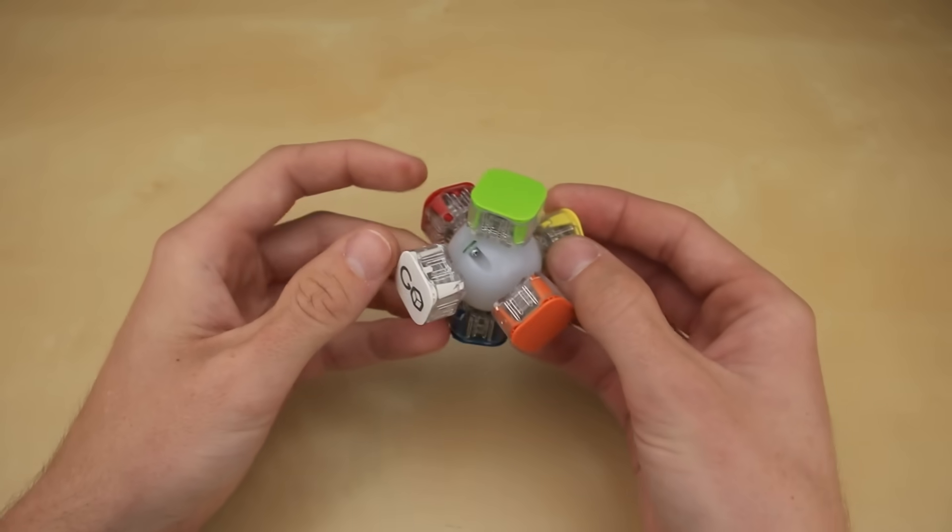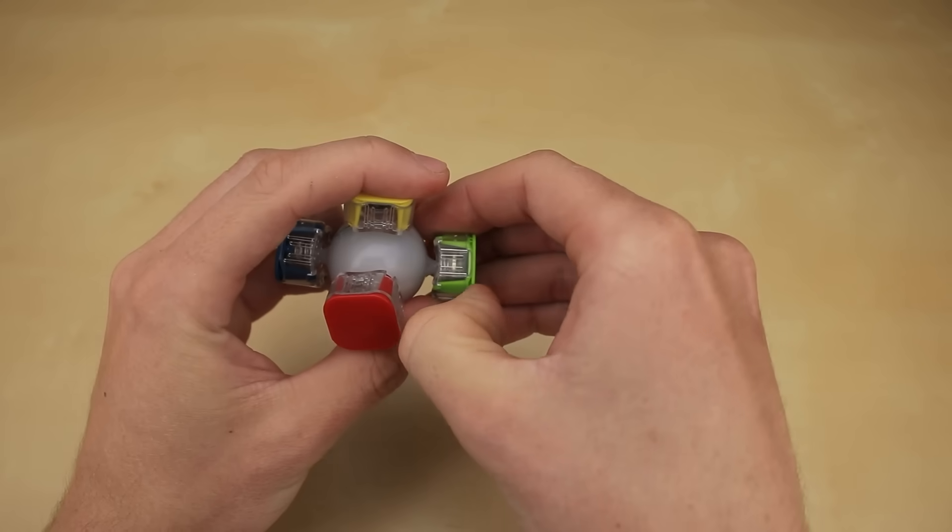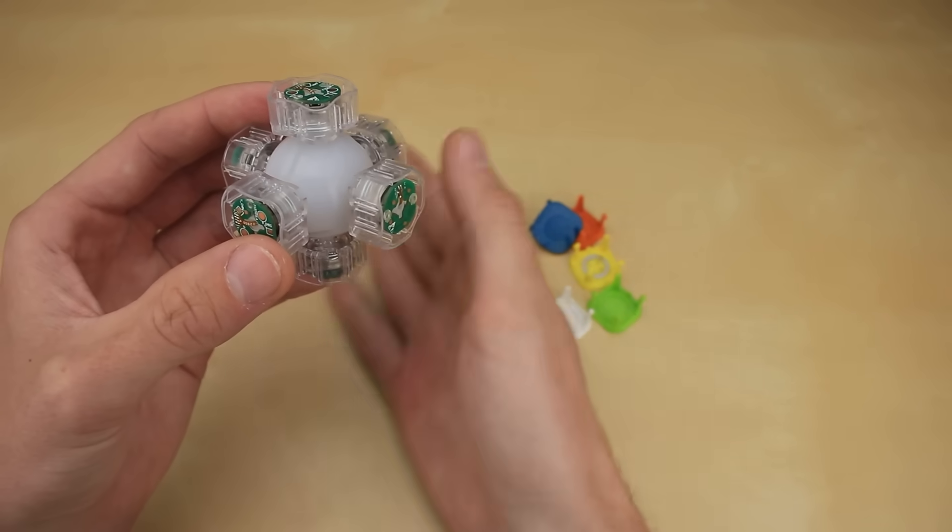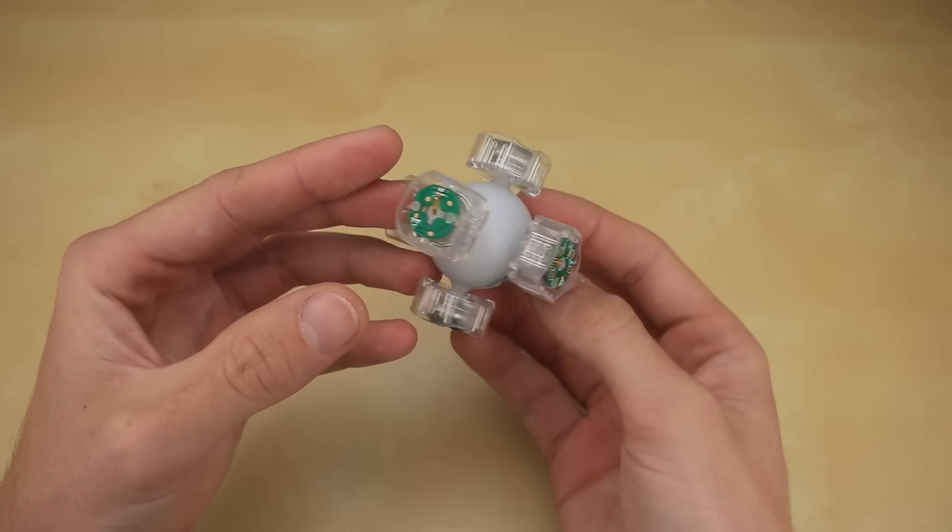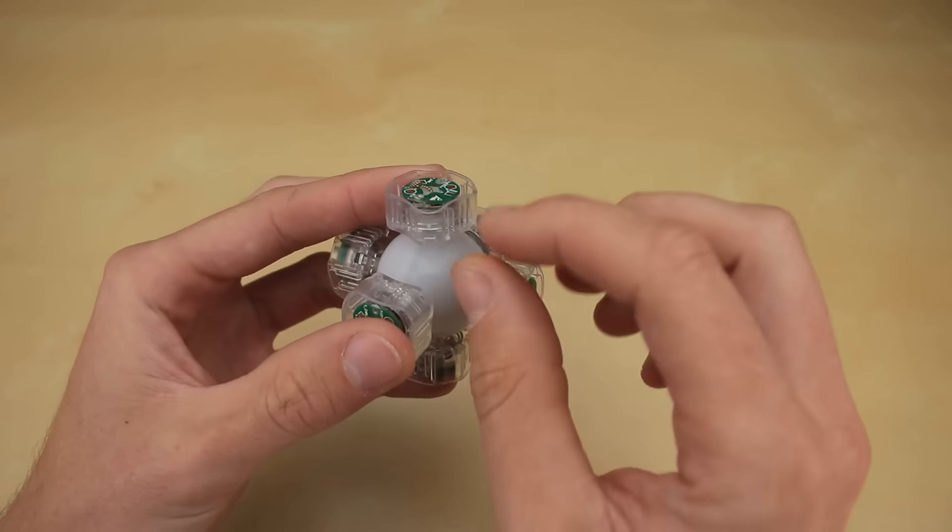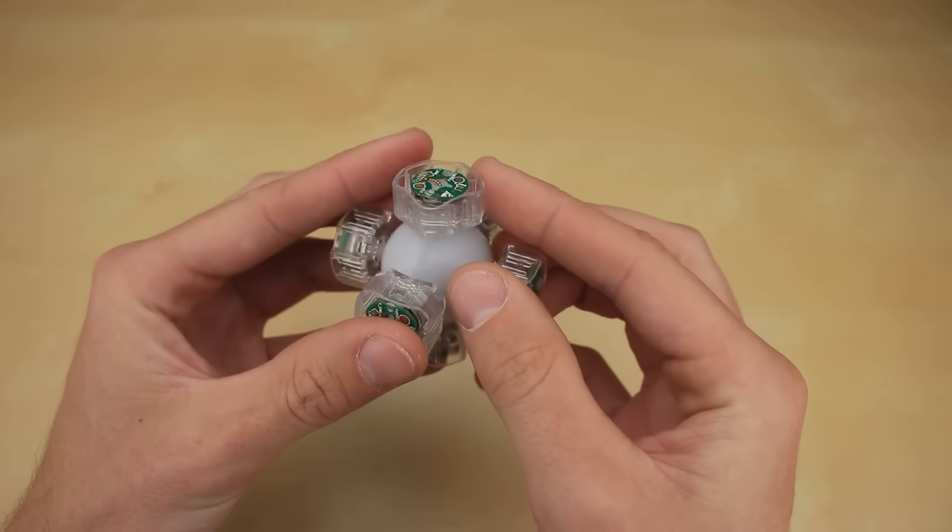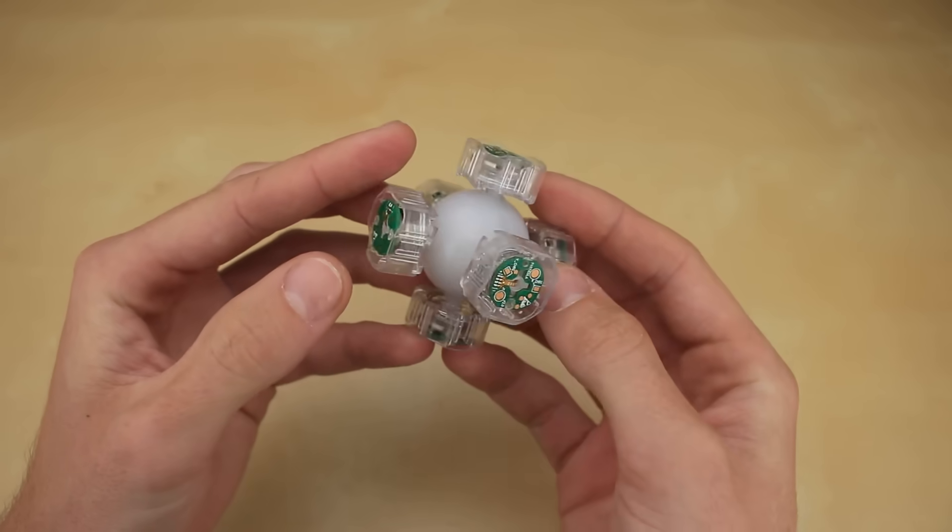Right here, we have the core where all of the electronics live. If we go ahead and pop off all these center caps, which is excruciatingly difficult by the way, you can now see there's a little circuit board underneath each one with sensors mounted on it, which detect the movement of the centerpieces, which is how it knows how you're turning the cube.